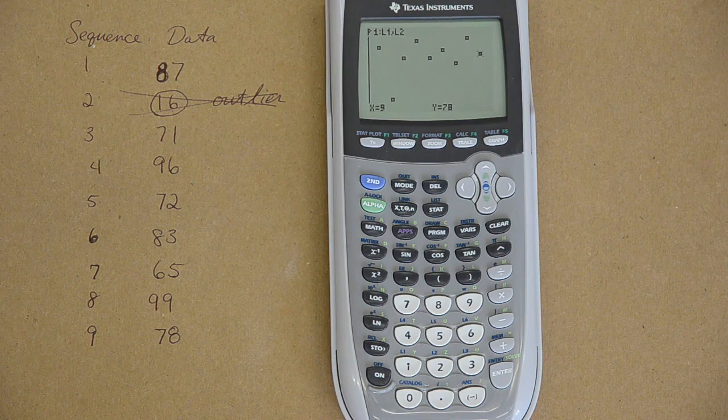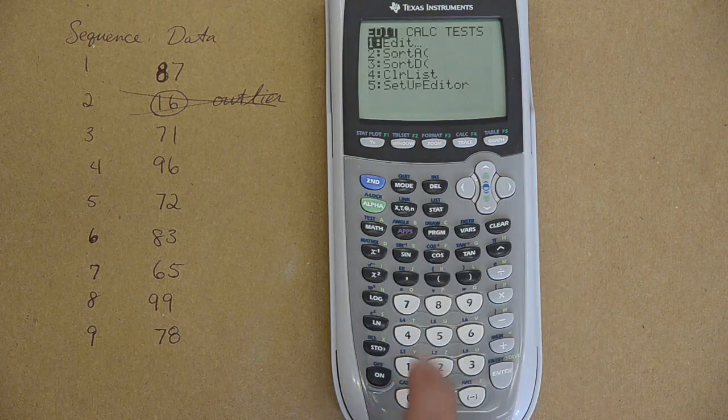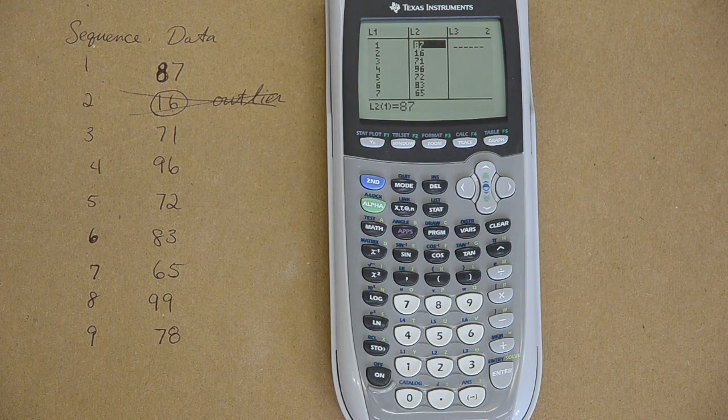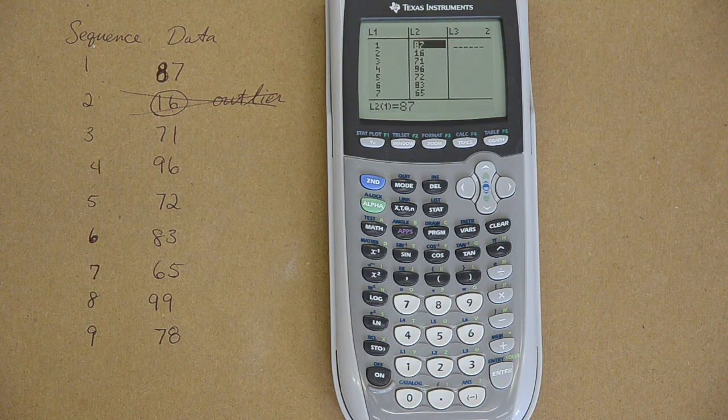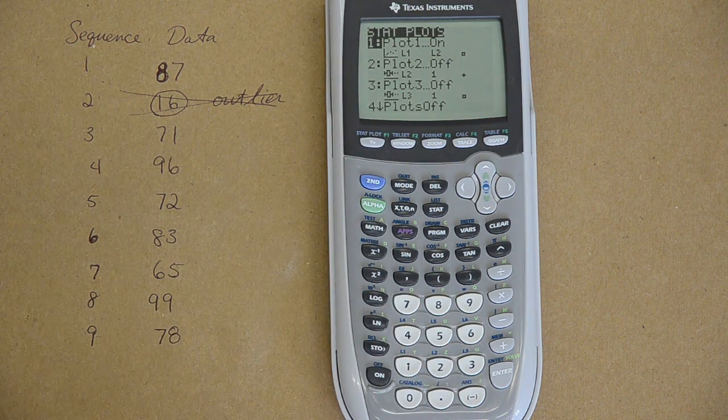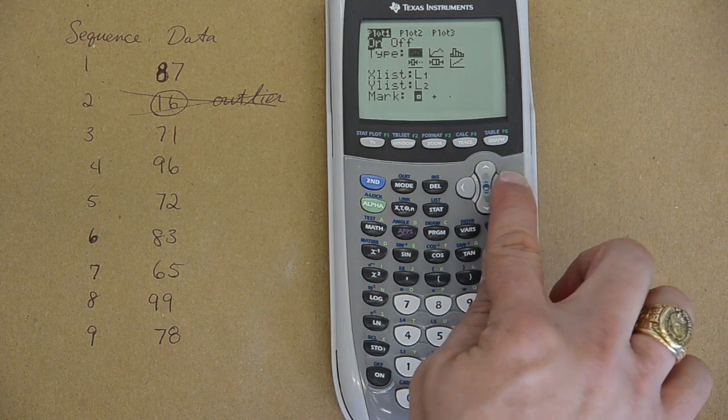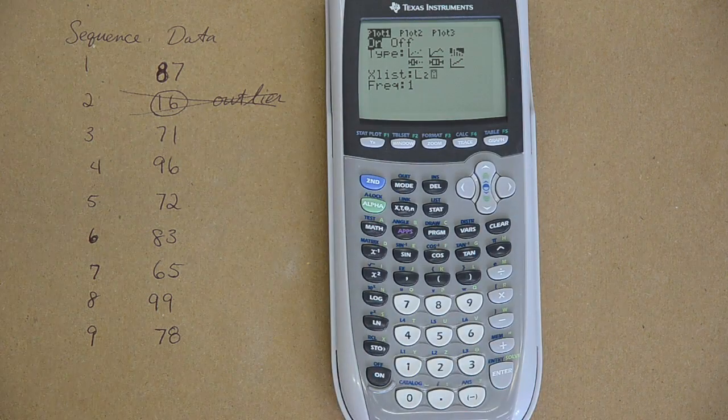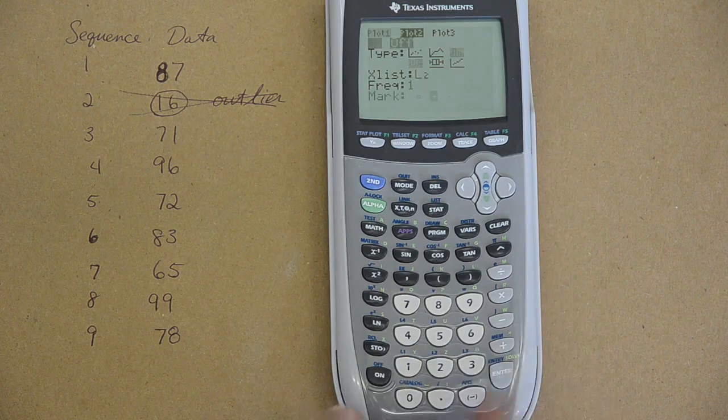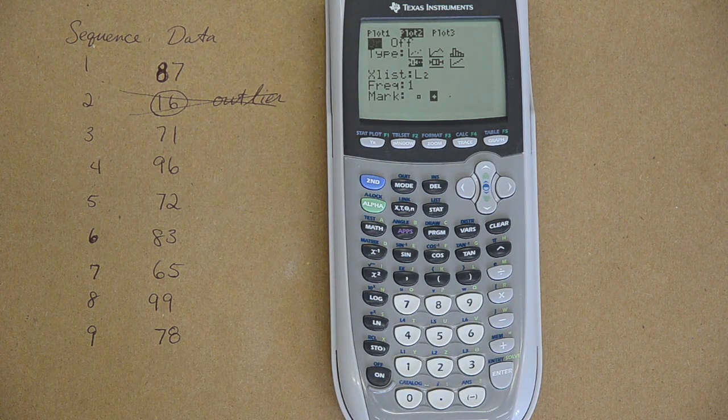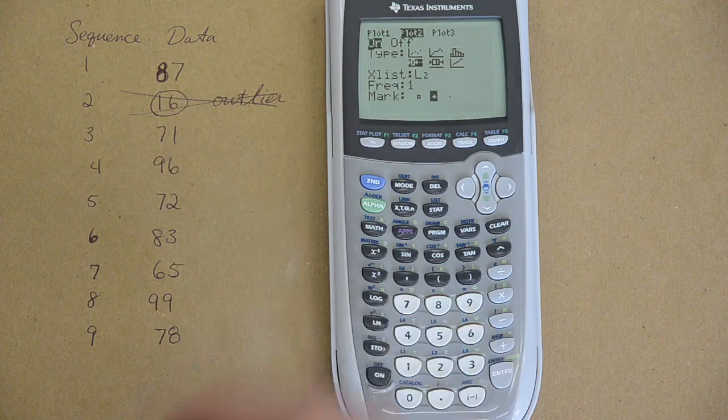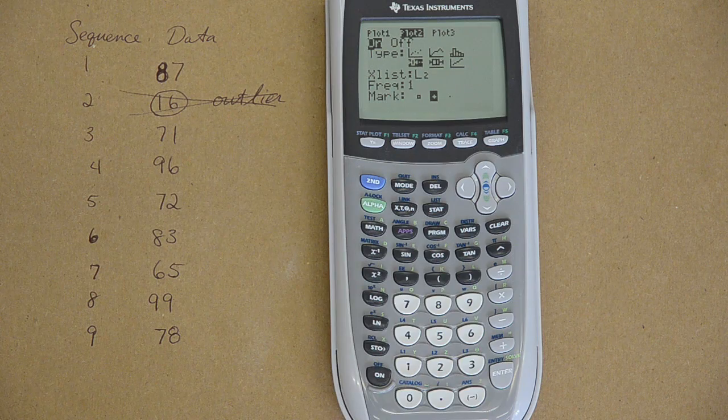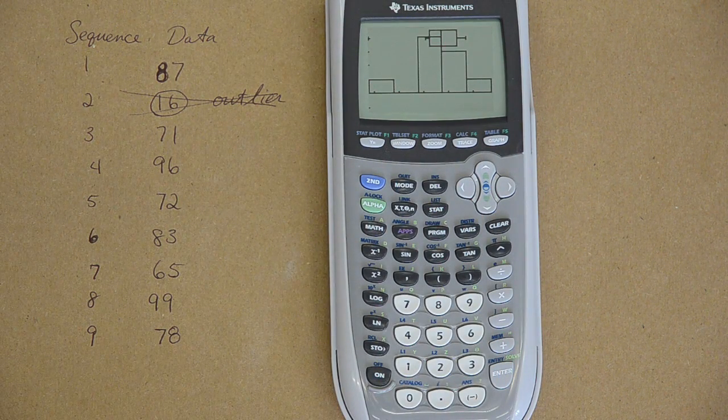I think I might have just a minute left. If I do stat edit, let's do something neat. Let's display this data in both a histogram and a box plot at the same time to see the comparison between the two. Second stat plot, one, I am going to have one be a histogram, and remember my data was in list two, not list one. Now I am going to arrow up to plot two, and hit enter, I am going to turn it on, and below the histogram I made just a second ago, I am going to put a box plot underneath the histogram, and zoom nine, and there you go, we have a...